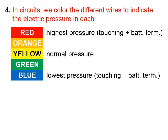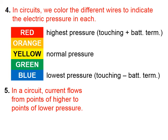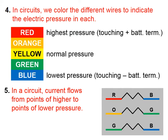Then there are three intermediate colors, with yellow being normal pressure. In a circuit, current will always flow from points of higher to points of lower pressure. So let's say that somehow you determine that the pressure in this wire is the highest possible pressure, and so you color that wire red, and this one you color blue. In another circuit, you determine that this colored wire should be orange, because it has higher than normal pressure but not the highest. This has lower than normal pressure but not the lowest, so we color it green.